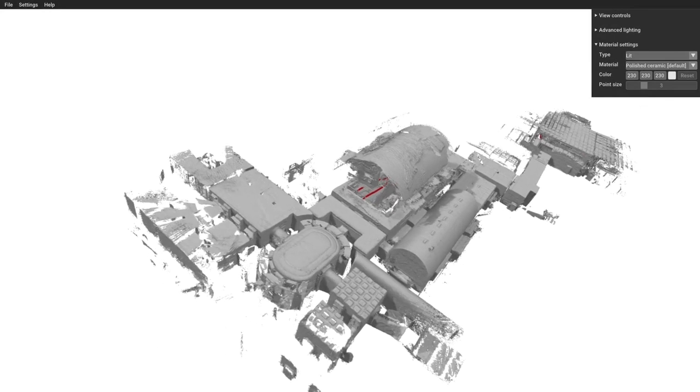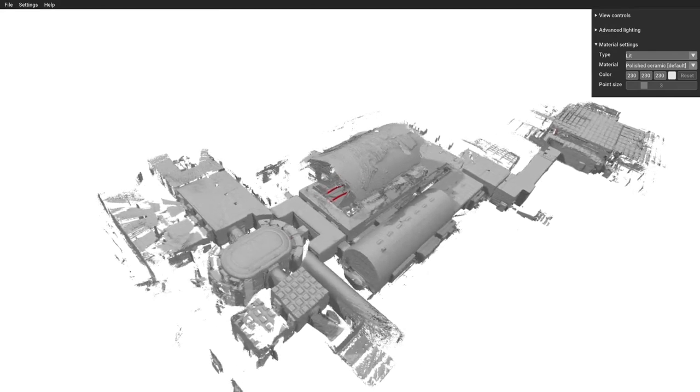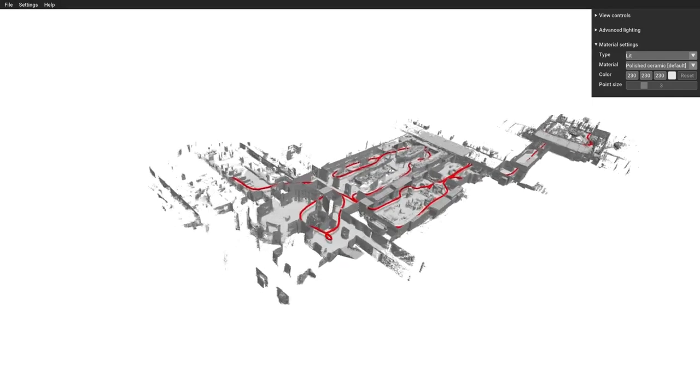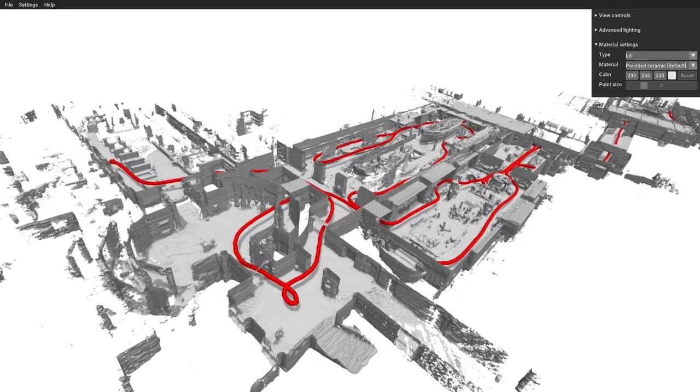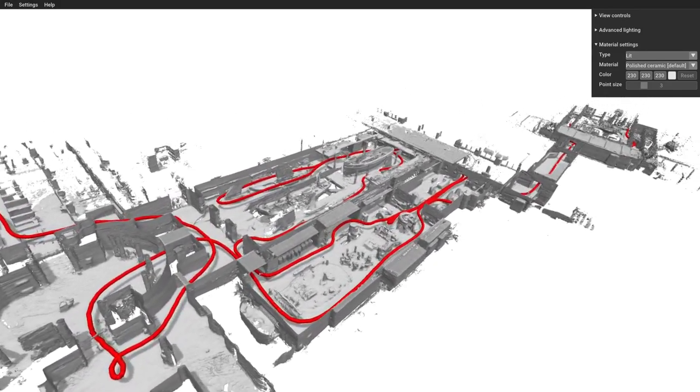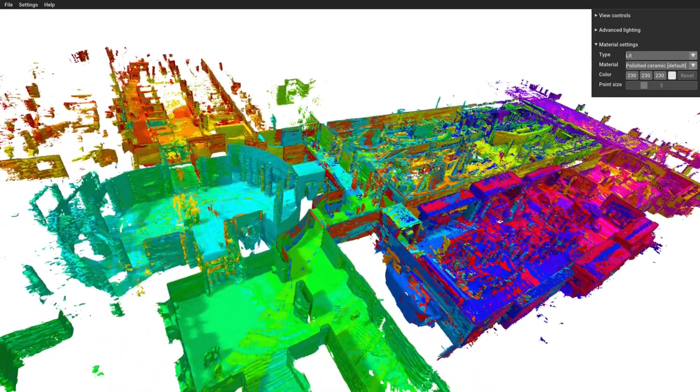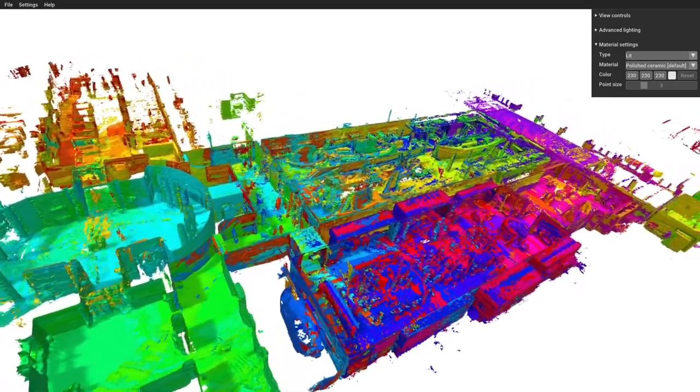We illustrate our proposal on the Deutsches Museum dataset released with Google Cartographer. Here, we show a signed distance function-based reconstruction from a backpack-mounted LiDAR. Again, our map is represented as a collection of submaps.